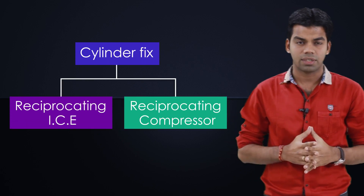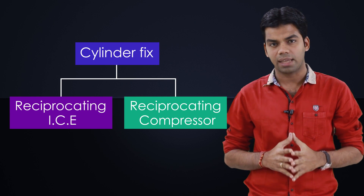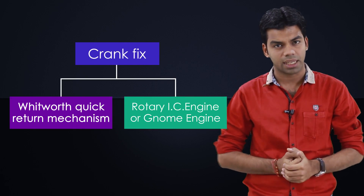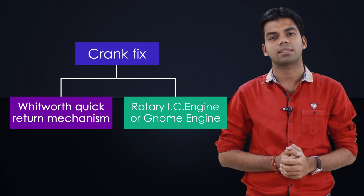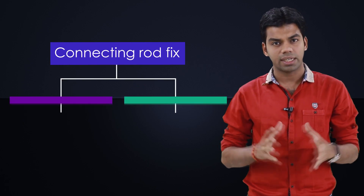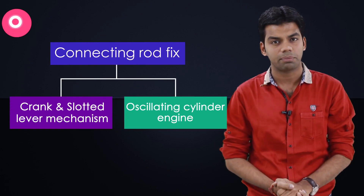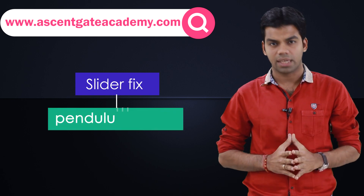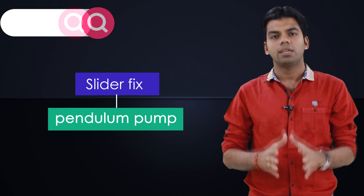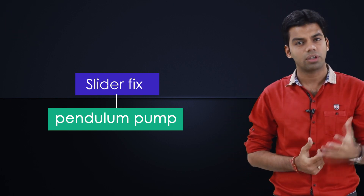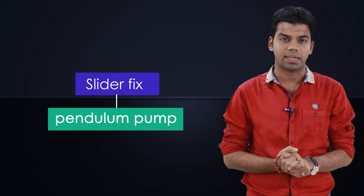To summarize: in the first inversion when the cylinder is fixed, we get two mechanisms — reciprocating IC engine and reciprocating compressor. When the crank is fixed, we get two mechanisms — Whitworth quick return motion mechanism and rotary IC engine. When the connecting rod is fixed, we again get two mechanisms — crank and slotted lever mechanism and oscillating cylinder engine. When the slider is fixed, we get one mechanism — the pendulum pump. So in total, the single slider crank chain has four different inversions yielding seven different mechanisms.